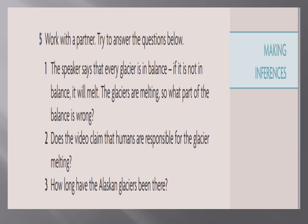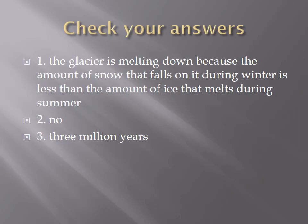Does the video claim that humans are responsible for the glacier melting? How long have Alaska glaciers been there? Now check your answers. The glacier is melting because the amount of snow that falls during winter is less than the amount of ice that melts during summer. Does the video say humans are directly responsible? No, it doesn't. The glaciers have been there for three million years.